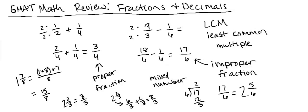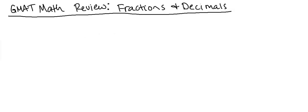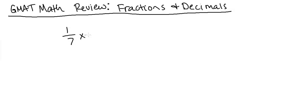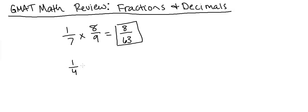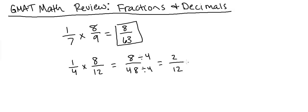Now let's talk about multiplication and division. With multiplication, you simply multiply straight across. One seventh times eight ninths: one times eight is eight, seven times nine is 63, giving eight over 63. Another example: one over four times eight over 12 gives eight over 48. This isn't fully simplified, so we take out a factor of four to get two over 12, then divide by two again to get one over six.